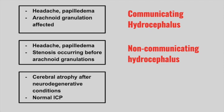Next is a patient with cerebral atrophy after a neurodegenerative condition and a normal intracranial pressure. This is hydrocephalus ex vacuo. This is not an actual hydrocephalus — it is an atrophy of brain tissue, so it looks like you have more water inside the brain.